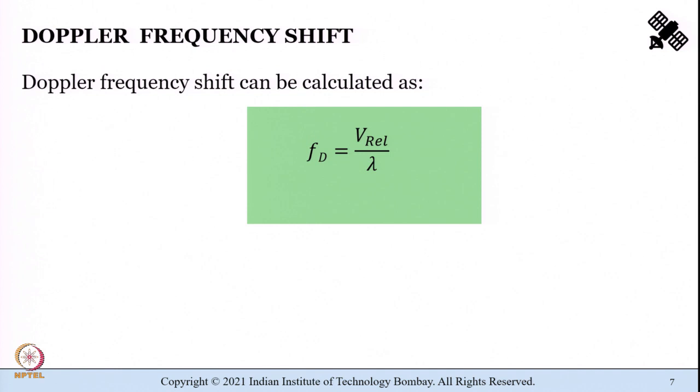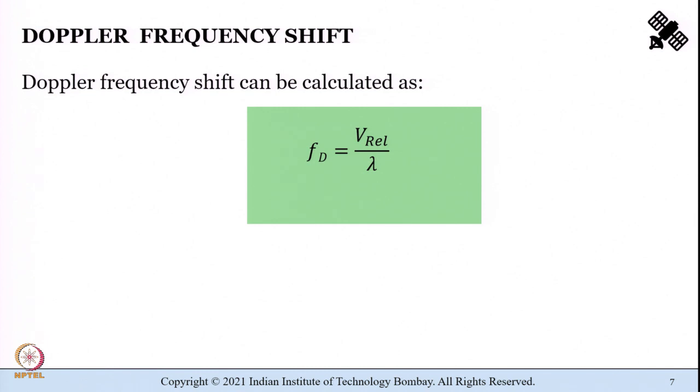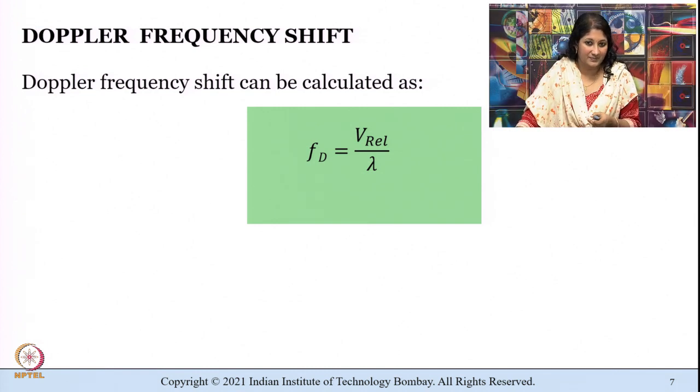Please note that we are more interested in understanding the rate of change of phase with time — that is, d(phi)/dt — rather than phi itself. Recalling from earlier lectures where we defined angular frequency denoted by omega, we can now write expressions to calculate the Doppler frequency shift as: Doppler frequency shift = V_relative / lambda, where V_relative is the relative velocity and lambda is the wavelength.